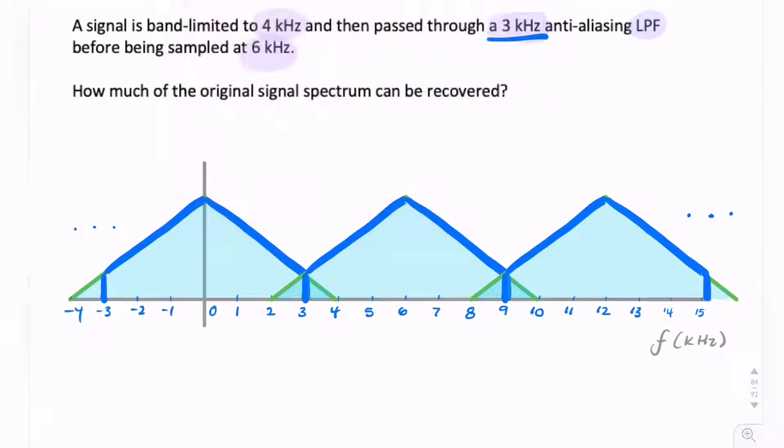So these are my replicas, caused by sampling. But you'll notice this time there's no aliasing, because what we have is critical sampling.